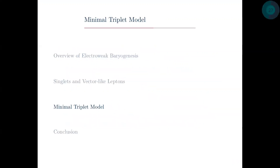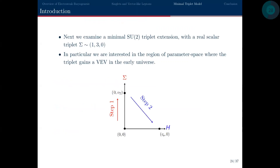I'm also going to spend some time talking about a minimal triplet extension to the standard model. Unlike the previous model, this isn't capable of generating the observed baryon asymmetry, but it's inspired by models that look at novel electroweak phase transitions. We consider the standard model extended with a real SU(2) triplet scalar, and we're interested in the region of parameter space giving a two-step electroweak symmetry breaking phase transition.